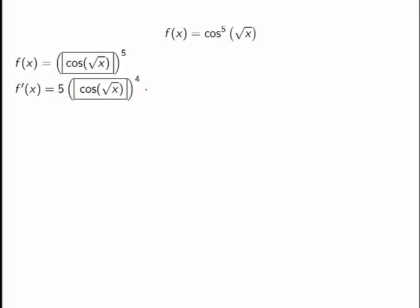So now what we have to do is find the derivative of cosine of the square root of x. This isn't something you might know the derivative of right away, but if I need to find the derivative, I notice this too is a compound function.